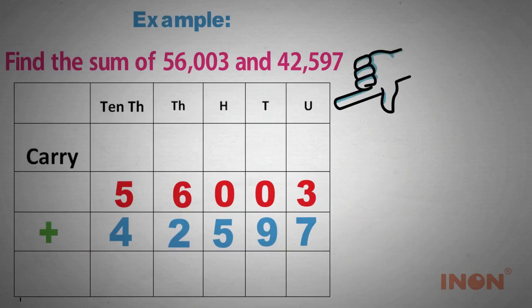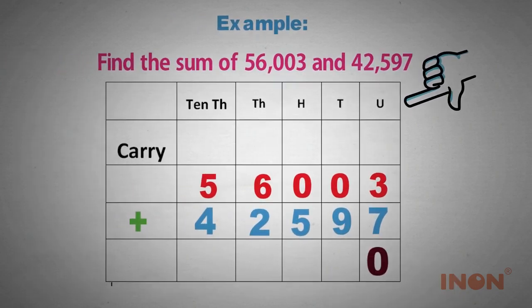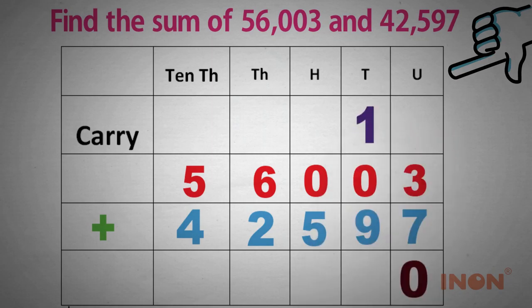it is 3 and 7. By adding 3 and 7, we get 10. Therefore, 1 is the carry in tens and 0 is the answer.